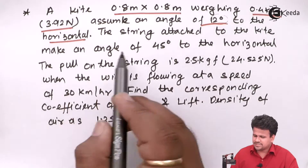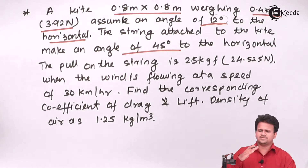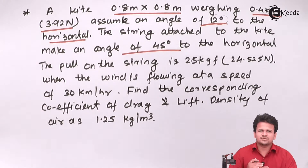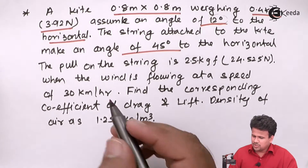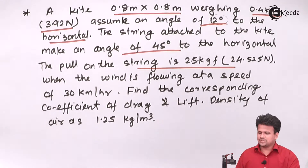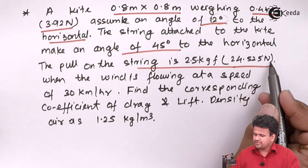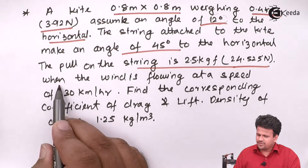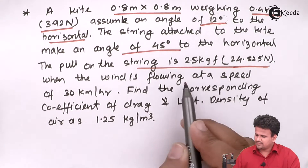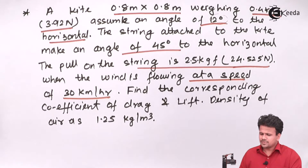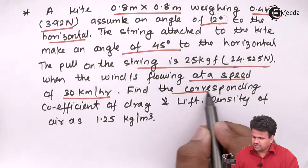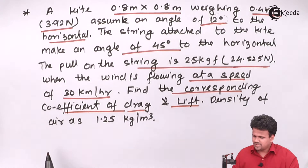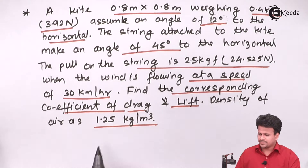The string attached to the kite makes an angle of 45 degrees to the horizontal. The pull on the string controlled by the individual is 24.52 Newtons, with the wind flowing at a velocity of 30 kilometers per hour. We need to find the corresponding coefficient of drag as well as lift, if the density of air is given as 1.25 kg/m³.